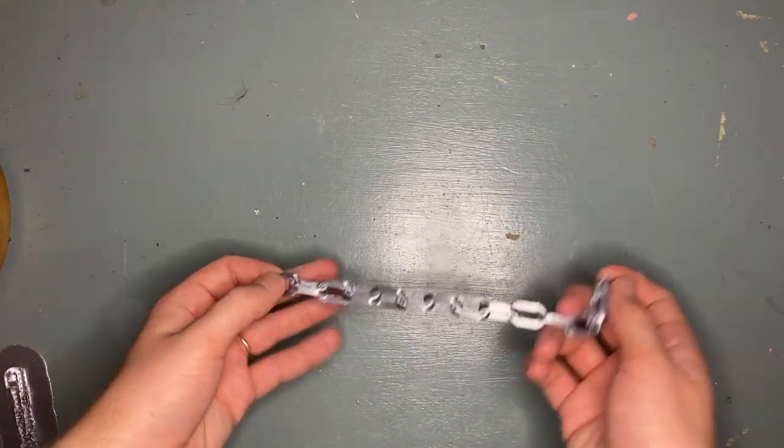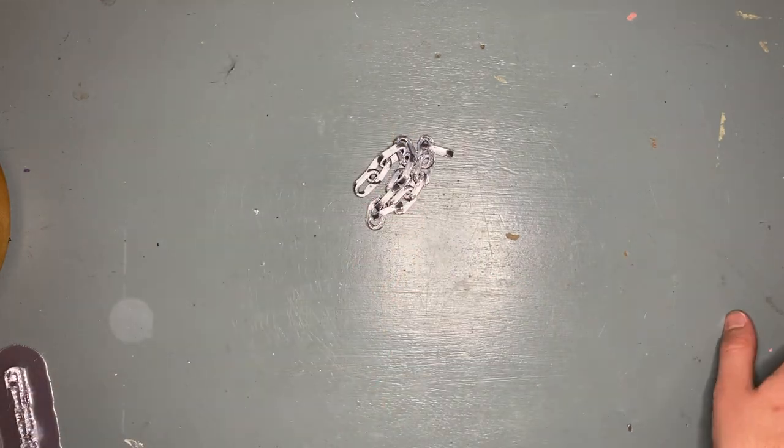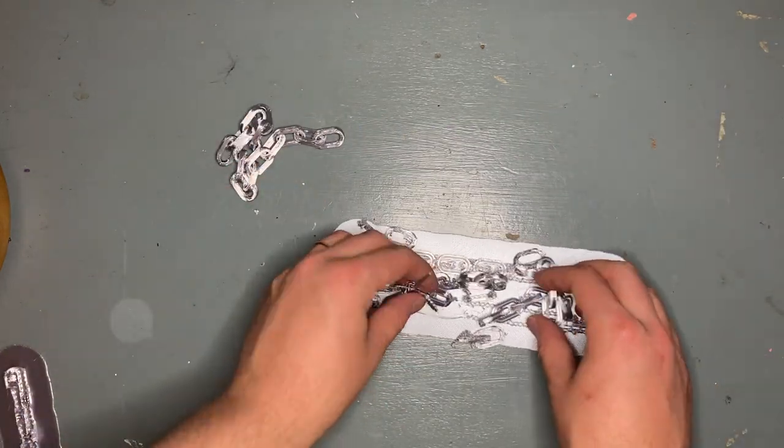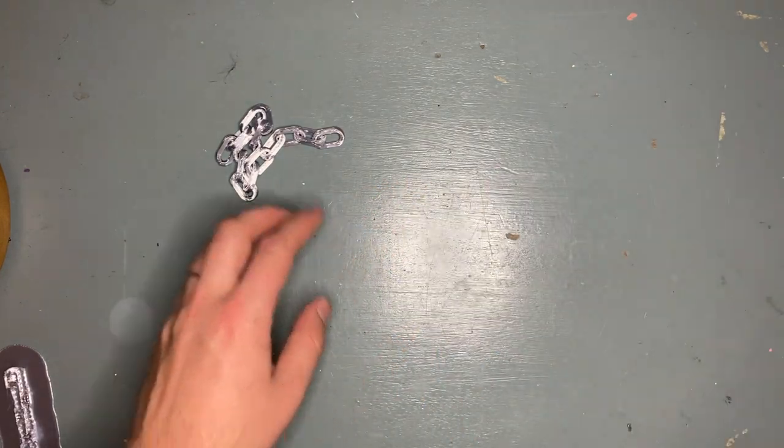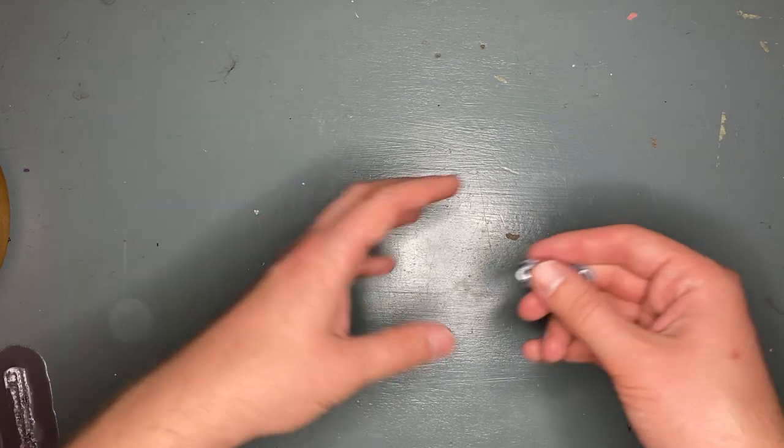I've previously attempted to print the part with tree supports and without orienting it at the 45 degree angle, and I got a pretty bad build failure. The print completed, but the chains all dissolved when I tried to take them apart.